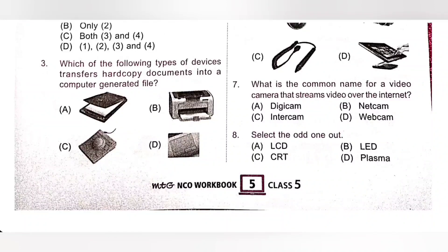Third one, which of the following type of devices transfers hard copy documents into a computer generated file? We know scanner. Scanner transfers hard copy documents into a computer generated file. Printer transfers computer generated file into hard copy documents. Option A.